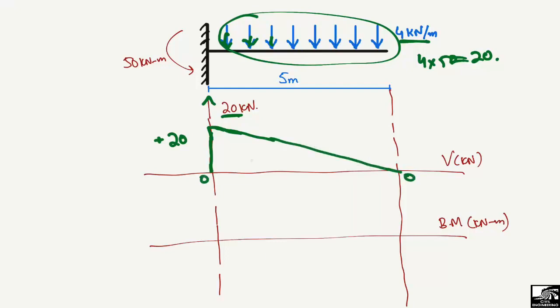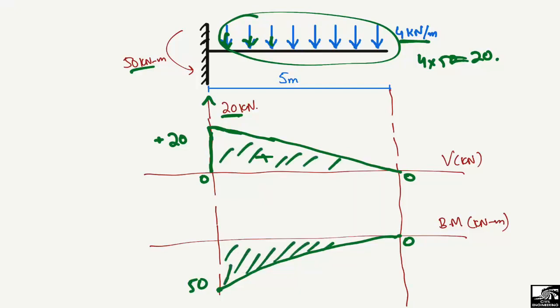Zero coincides with the reference line, so this is the shear force diagram for this beam. For the bending moment diagram, at the fixed support the moment is 50 kilonewton·meter, and at the free end there is no support so the moment equals zero. We draw a line directly between these two values — this is the bending moment diagram. We can also find the moment in another way using the area of the shear force diagram.